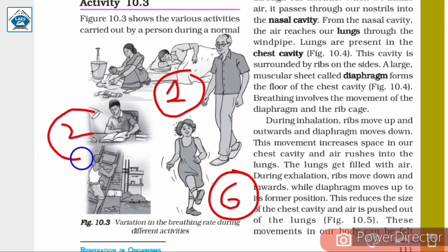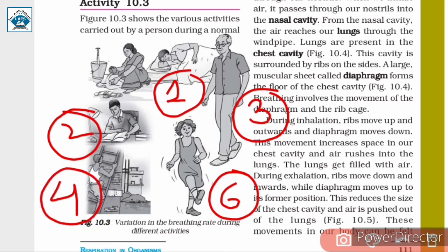For walking, a bit more energy is required, so we give number three. Climbing the ladder requires more energy than walking, so the man climbing gets number four. The lady washing clothes requires more energy than climbing, giving her number five. Finally, the running girl has the fastest breathing rate among all. In this way, we can assign numbers in ascending order of breathing rate.